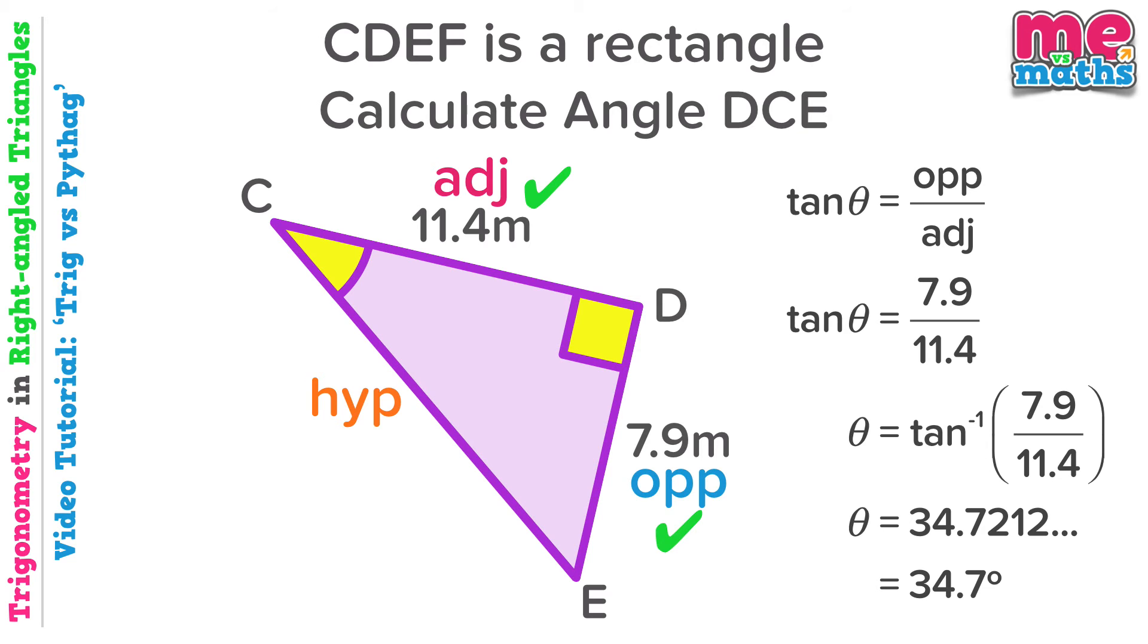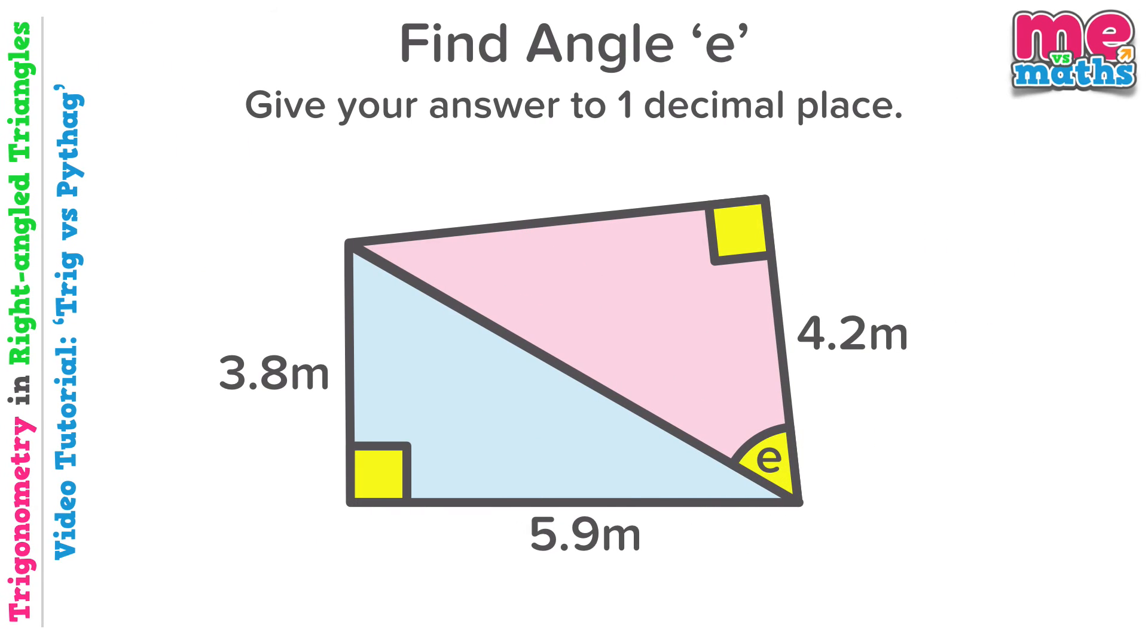A question like this will be worth a significant amount of marks in an exam and it often puts students off as it just all seems a bit too much. We're going to break it down into small parts and work our way through. Firstly, this shape is not a badly drawn rectangle; however, it is made up of two right angle triangles as we can see.